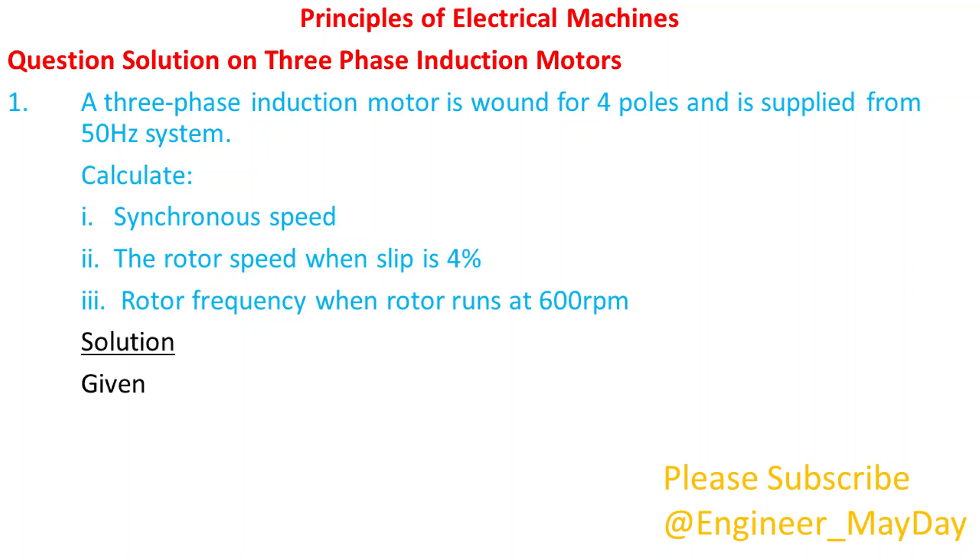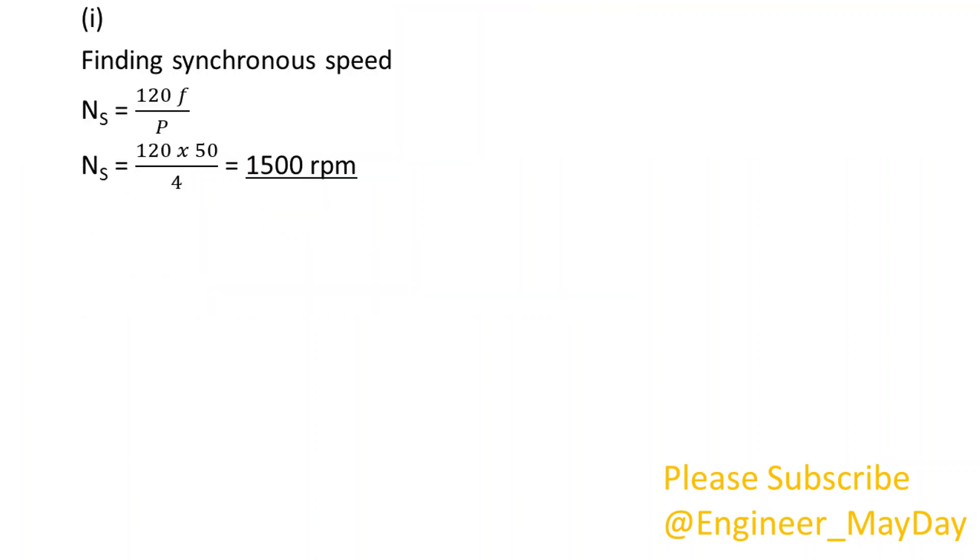Solution. Given P equals 4, F equals 50 Hz. Finding synchronous speed: Ns equals 1500 RPM.